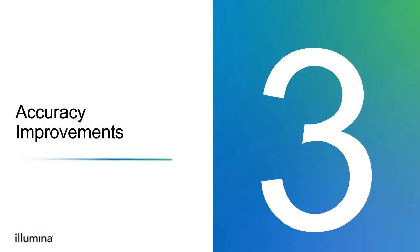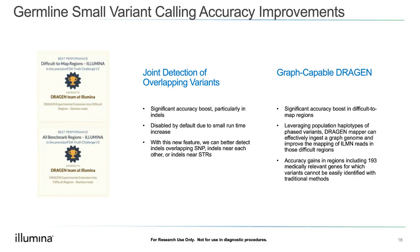Moving on to the third big update: accuracy improvements. Let's first talk about germline small variant calling accuracy. In the summer of this year, there was a PrecisionFDA challenge regarding the Genome in a Bottle samples — specifically HG002, 3, and 4 — where new truth sets were released. The PrecisionFDA group put out those samples and asked everybody to submit their improvements to address the new truth set, which extends the earlier truth set to about 7% more of the genome. There were two major improvements the Dragon team made that led to winning that challenge.